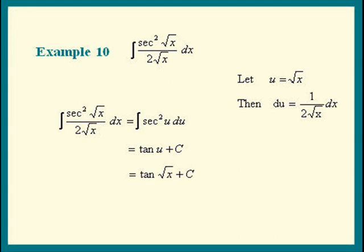Let's check our answer in our head this time. Differentiate tangent of square root of x — what do we get? Secant squared of square root of x times the derivative of square root of x, which is 1 over 2 square root of x. So it's correct.